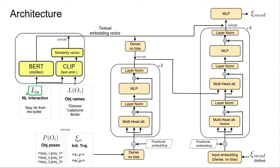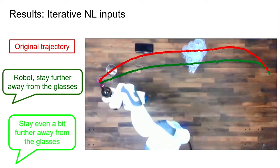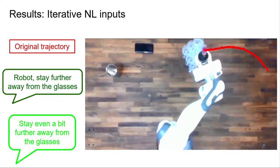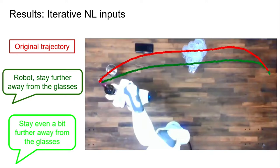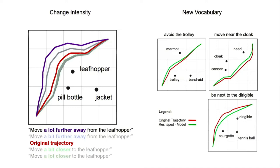On the robot barista problem, the original trajectory collides with glasses. If you tell the robot to stay away from the glasses, it finds a better path. You can even send another language command and the robot executes an even better trajectory. We also study the effect of instruction intensity: telling the robot to stay 'much further away,' 'a little further away,' or 'closer' produces correspondingly different output trajectories. We also analyze generalization to new vocabulary never seen during training.